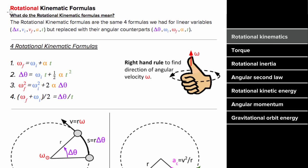The rotational kinematic formulas allow us to relate the five different rotational motion variables. They look just like the regular kinematic formulas, except instead of displacement there's angular displacement, instead of initial velocity there's initial angular velocity, instead of final velocity there's final angular velocity, instead of acceleration there's angular acceleration, and the time is still just the time.